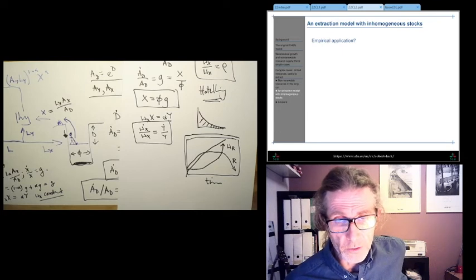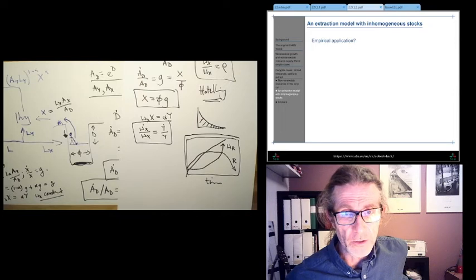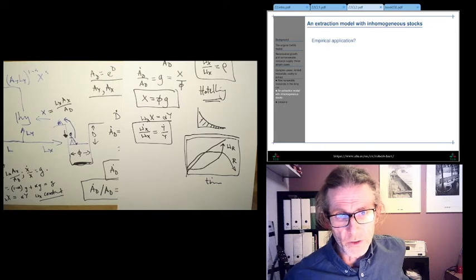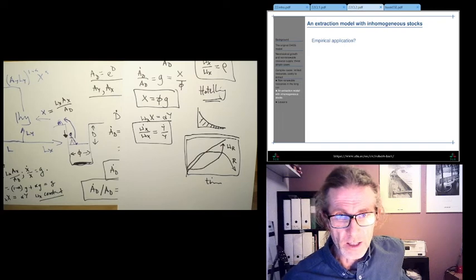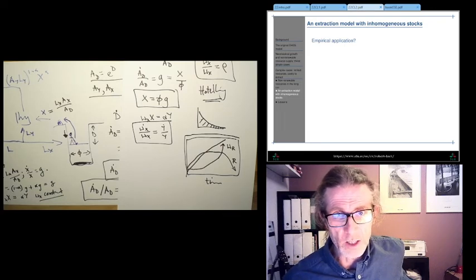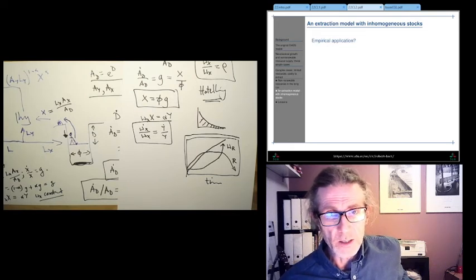We can actually parameterize this model and using geological data estimate extraction paths or likely or possible extraction paths for different minerals. I did that in the 2016 paper for copper, and it's a sort of two or three hundred year timescale before we really start looking at drastically significantly reduced extraction rates.